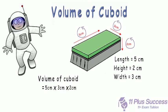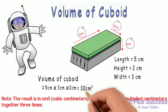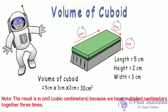Volume of Cuboid: 30cm³. Note: the result is in cubic centimeters because we have multiplied centimeters together three times.